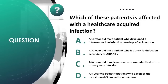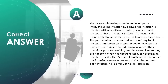Which of these patients is affected with a healthcare-acquired infection? A) 18-year-old male who developed an IV line infection two days after insertion, B) 72-year-old male at risk for infection secondary to AIDS/HIV, C) 67-year-old female admitted with a urinary tract infection, D) 5-year-old who develops measles rash three days after admission. Correct answer is A. The 18-year-old with the IV line infection is affected with a healthcare-related, or nosocomial, infection.